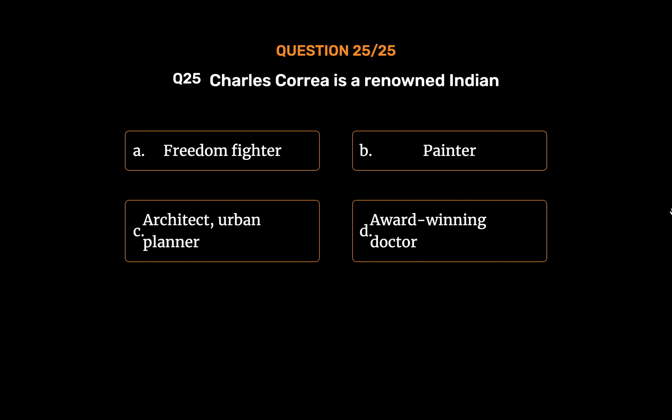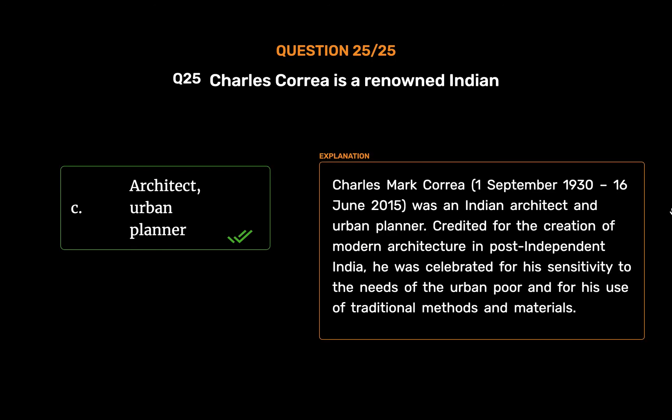The correct answer is Option C: Architect, urban planner. Charles Mark Correa (1 September 1930 – 16 June 2015) was an Indian architect and urban planner. Credited for the creation of modern architecture in post-independent India, he was celebrated for his sensitivity to the needs of the urban poor and for his use of traditional methods and materials.